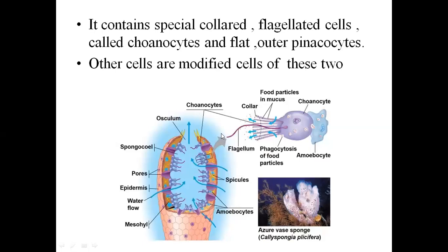What is a Choanocyte? Choanocytes are flagellated cells and they are collared cells. This cell helps the canal system, which we will study. Let's look at this cell structure.